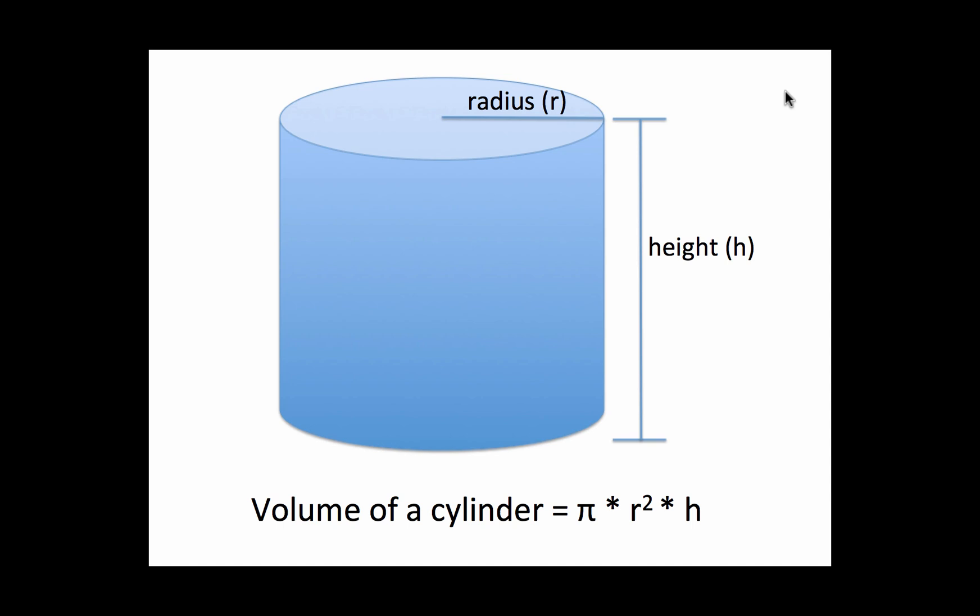The best way to describe the shape of a cylinder is to think of a can of soup or a can of pop. The volume of a cylinder tells us how much space it has on the inside of it. If you had a can of pop, the volume will be equal to how much pop fills the entire can.